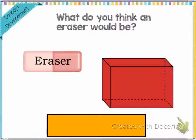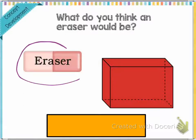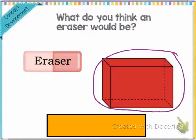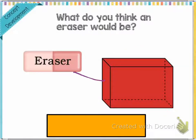So we're going to look at this first one — it says what do you think an eraser would be. Looking at the eraser right here, it also gives us a help with this little picture. The eraser kind of looks like this shape. Again, we've talked about five different types of 3D shapes: cone, cube, sphere, cylinder, and rectangular prism.